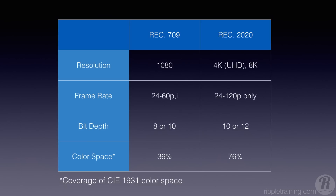Standard gamut — what Apple calls standard gamut — is really Rec. 709, which is a set of standards or recommendations for HD material, really 1080 material. Some of the specs include resolution, frame rate, bit depth, and color space. Wide gamut refers to something called Rec. 2020, which is the set of recommendations for UHD material.